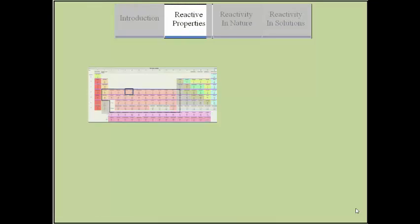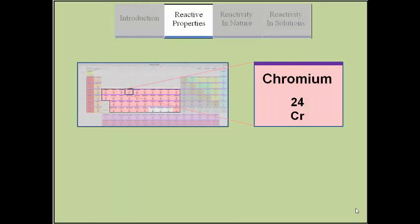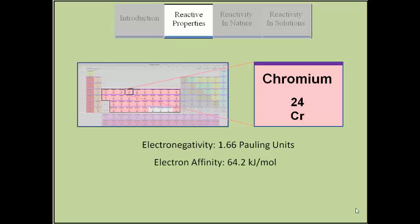Chromium is a transition metal in Group 6 in Period 4. It has an electronegativity of 1.66 in Pauling units and an electron affinity of 64.2 kJ per mole. Chromium has an enthalpy of fusion of 20.5 kJ per mole due to its high melting point of 1,907 degrees Celsius.